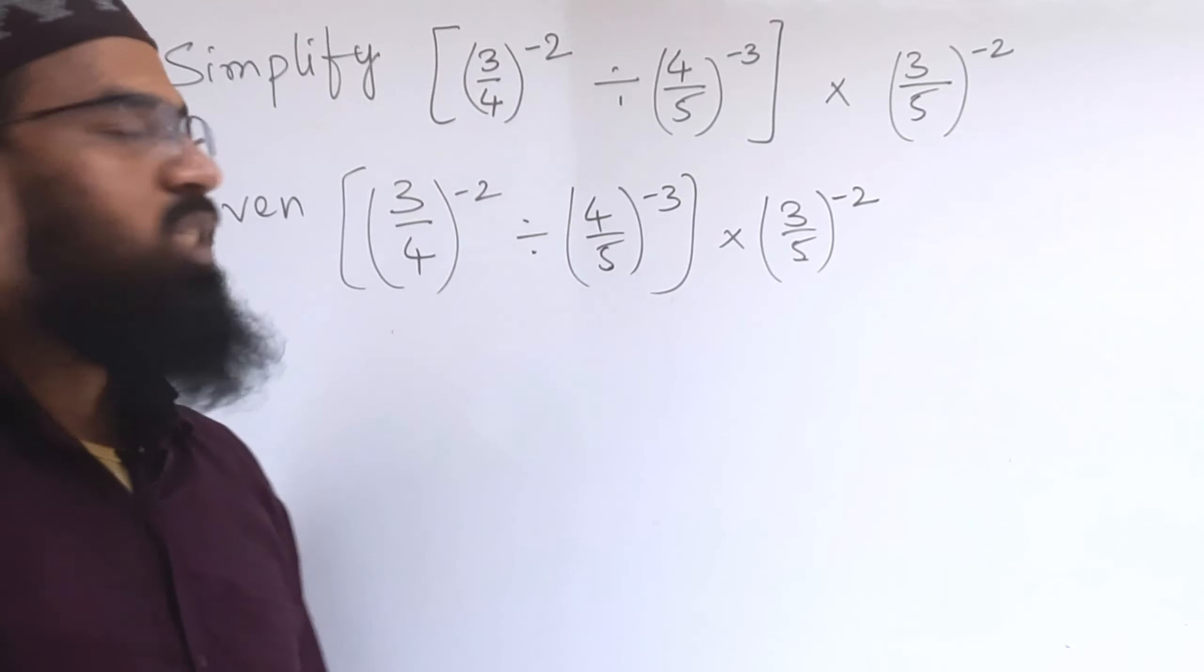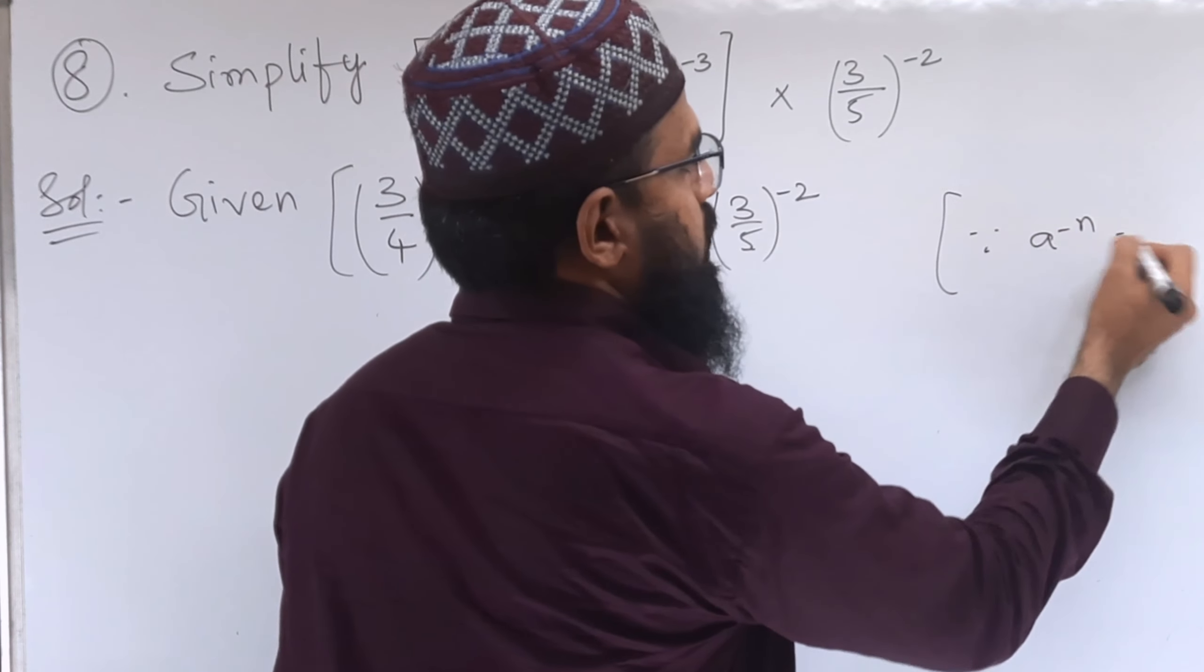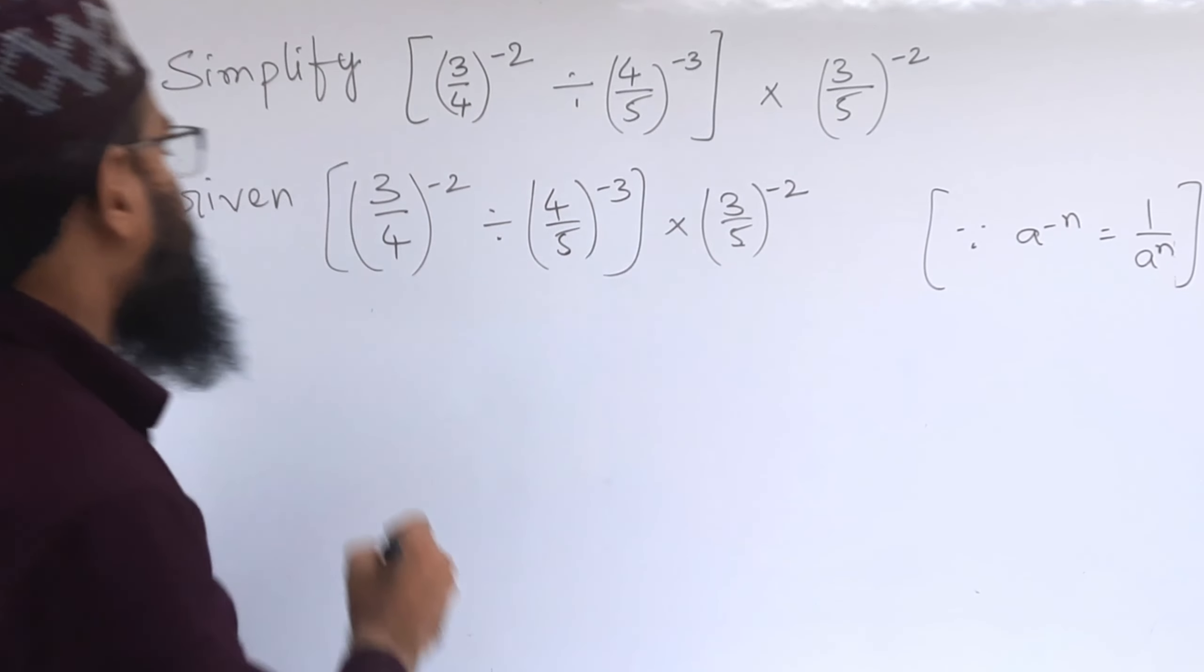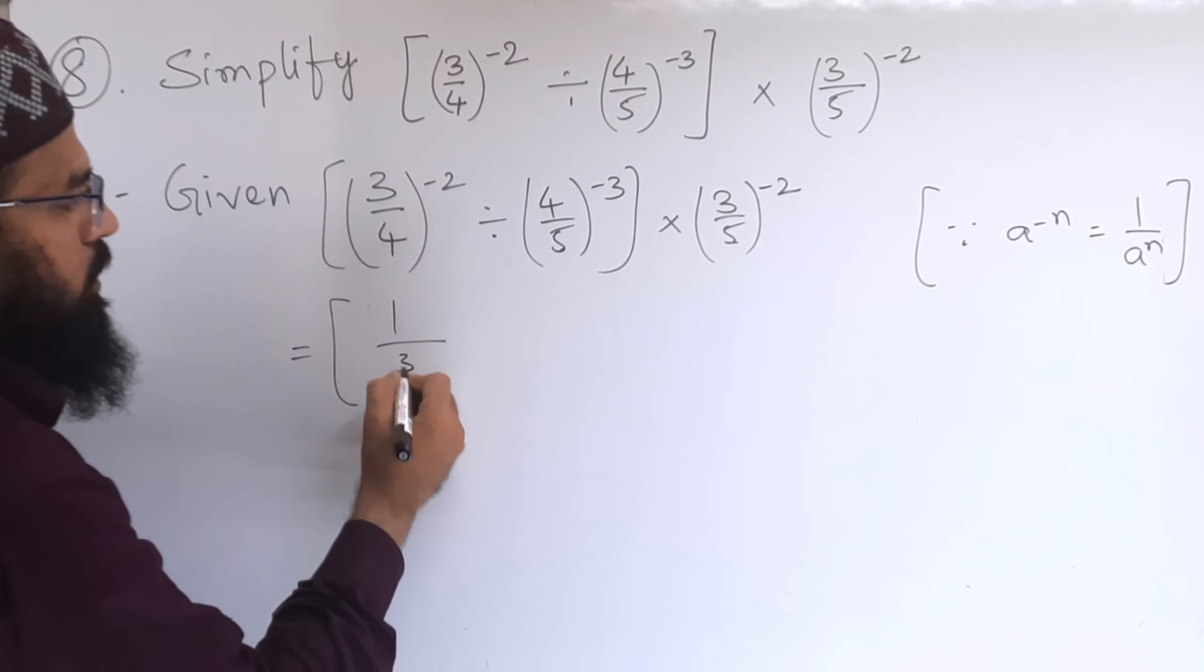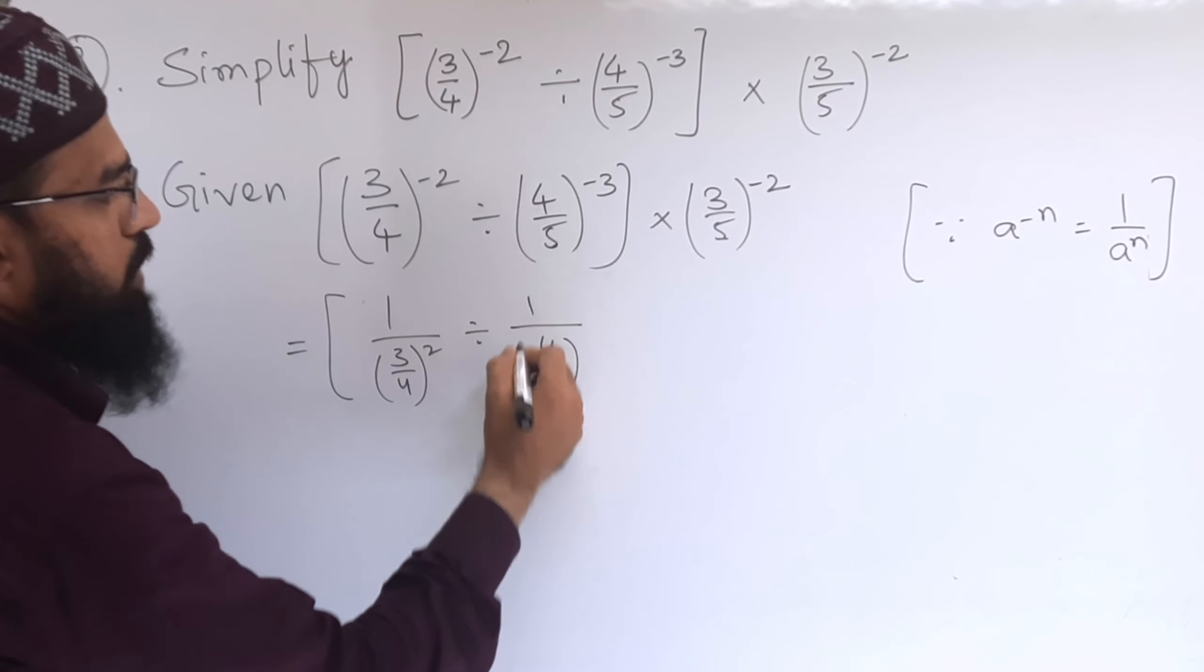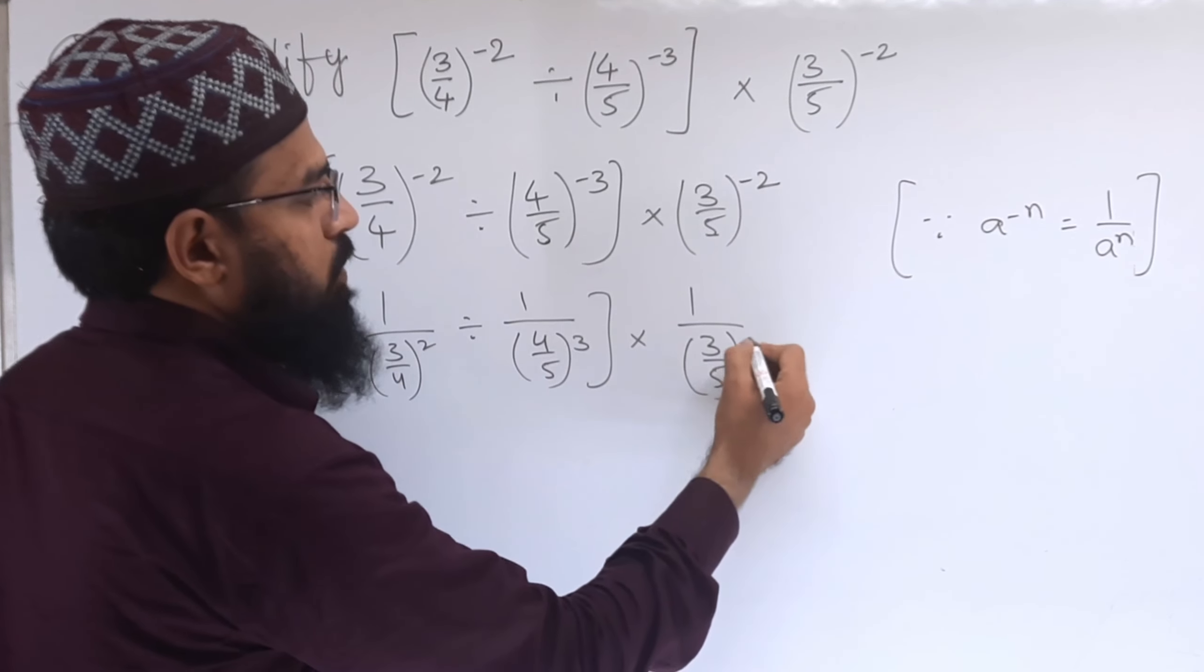First we will remove this minus. To remove that, we know the formula that is a^(-n) is equal to 1/a^n. So this will come in denominator. We can write 1/(3/4)^2 divided by 1/(4/5)^3 into 1/(3/5)^2.